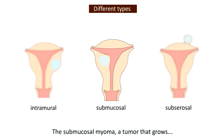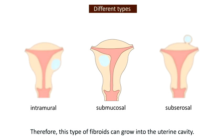The submucosal myoma is a tumour that grows beneath the surface of the uterus lining. Therefore, this type of fibroid can grow in the uterine cavity.